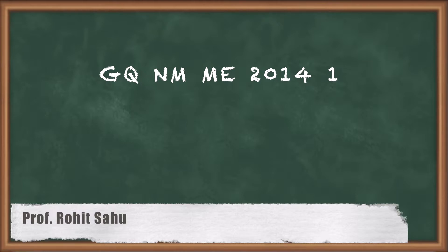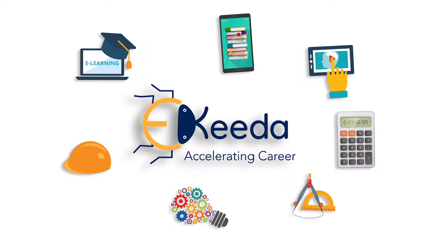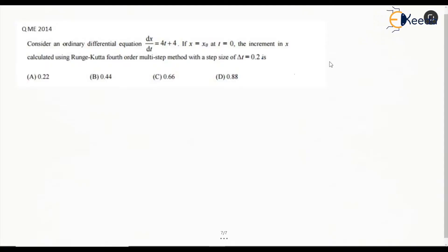This is on Runge-Kutta method from the numerical methods unit. It says: consider an ordinary differential equation dx/dt = 4t + 4. If x = x₀ at t = 0, the increment is calculated using Runge-Kutta fourth order multi-step method with a step size of Δt = 0.2.